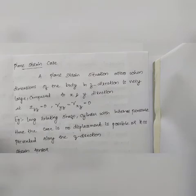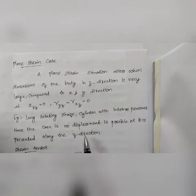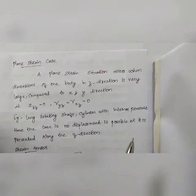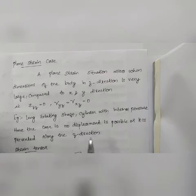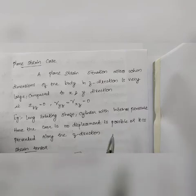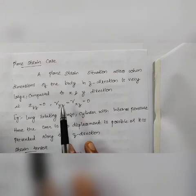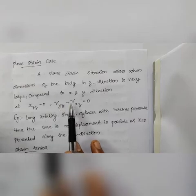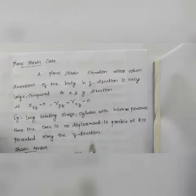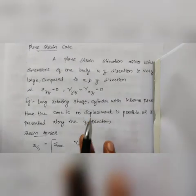In this case, no displacement is possible in the z-direction. The displacement in z is negligible or is prevented. Therefore the strain in the z-direction is negligible. The shear strains gamma_yz and gamma_xz are also zero — shear strain in the z-direction is zero. This defines the plane strain case.